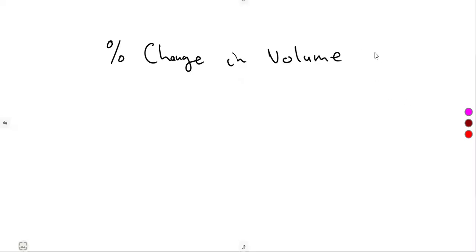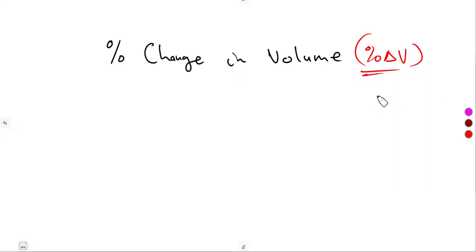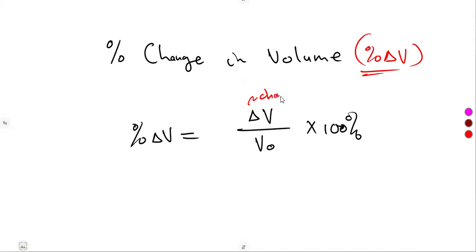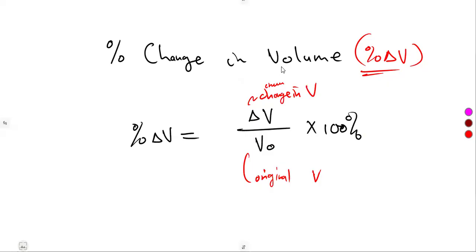The percentage change in volume is equivalent to the change in volume over the original volume. We must have the change in volume and the original volume. The change in volume can represent an increase or a decrease. When it is negative, we are talking about a percentage decrease. When it is positive, that is a percentage increase.